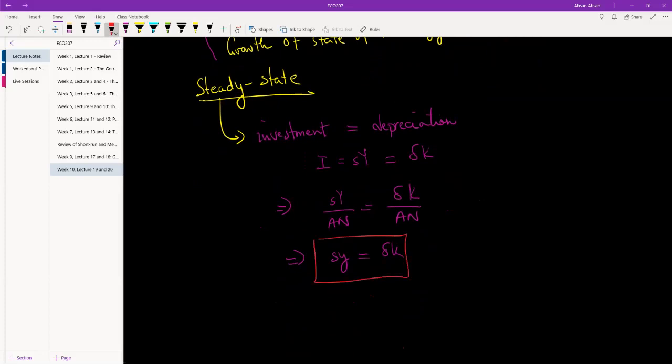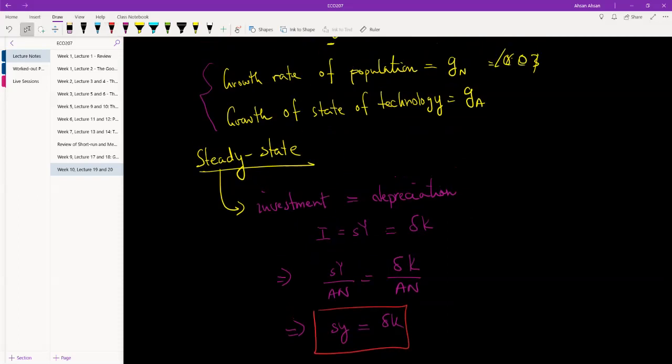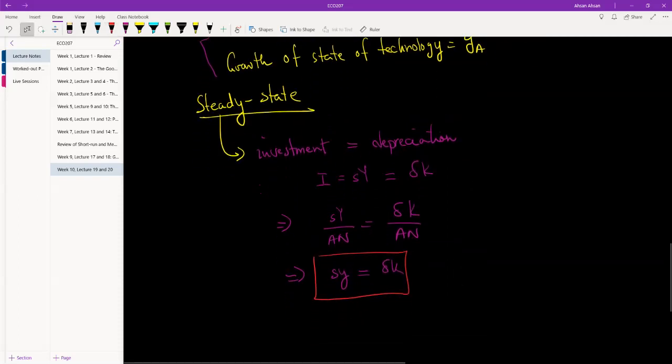Now think, if we have this but population continues to increase, we will no longer be at the steady state because if population keeps on increasing, then output per worker will be falling, capital per worker will be falling. Similarly we have assumed that technology is also changing, but if technology continues to improve, this relationship no longer keeps us at steady state.